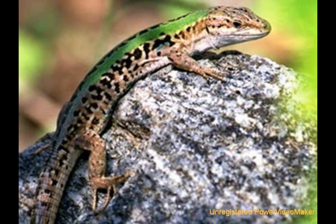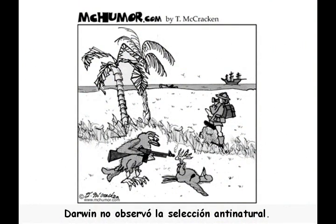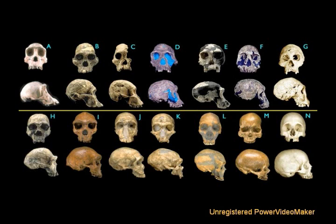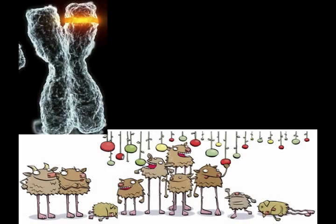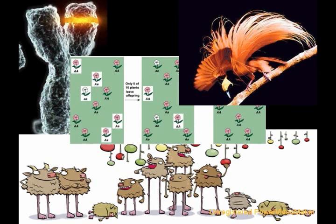Scientists have directly observed the evolution of new structures, such as the formation of cecal valves in the Italian wall lizards. Scientists have directly observed every aspect of evolution. Therefore, it is a fact that species evolve. Evolution is a fact when describing what happened. It's the theory of evolution that seeks to explain how things happened — how do species evolve? The theory of evolution includes genetic mutations, natural selection, genetic drift, and sexual selection as mechanisms for the observed instances of evolution.